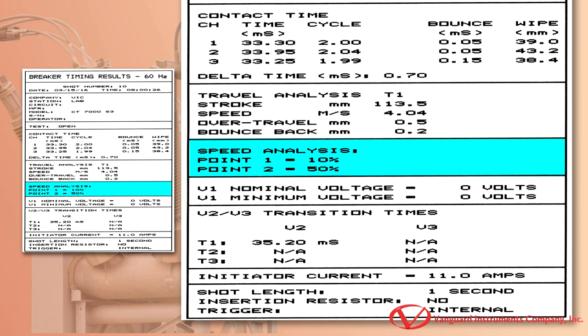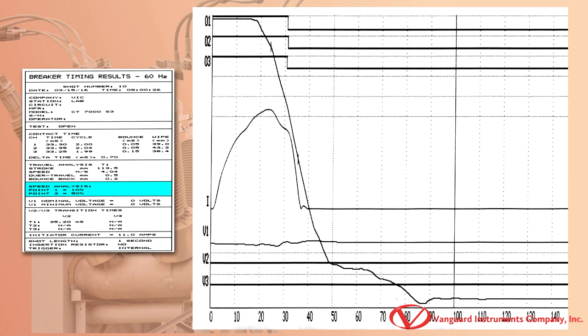In order for the CT7000S3 to calculate the contact velocity through the arc zone, the user must first define the two points on the travel curve. The two analysis points to be used are defined as AP1 and AP2. The AP1 in this case is the distance that is 10% of the stroke and is measured from the fully closed position. The AP2 in this case is the distance that is 50% of the stroke and measured from the fully closed position.